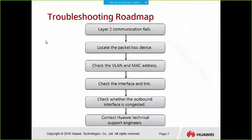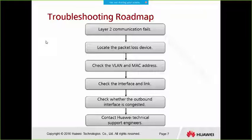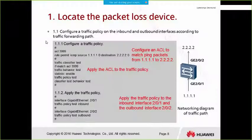For Layer 2 packet loss, the roadmap is: first verify Layer 2 communication fields, then locate the packet loss device. Once the device is located, check the VLAN and MAC address, check the interface and link, and check whether the outbound interface is congested. If the issue still cannot be resolved, contact Huawei.